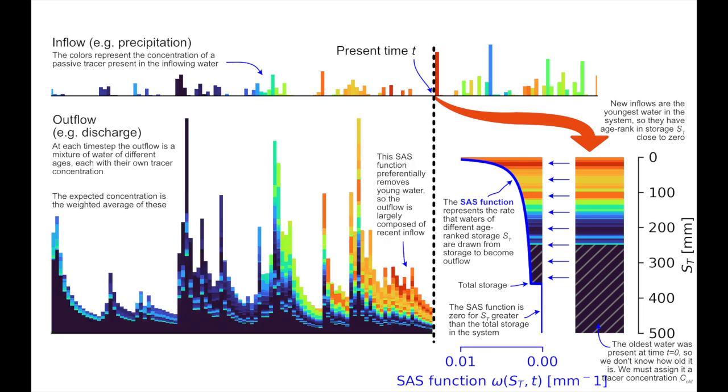Since the SAS function tells us the mixture of water in the outflow, we can calculate the rate of outflow of water of different ages. Since we also know the tracer concentration associated with each water age, we can calculate the concentration of that tracer that we expect to see in the outflow in our observations. If the SAS function we've used in our model is a good representation of how the system works, these predictions should match the data. Note that SAS doesn't predict the total outflow rate. You have to provide that data, just like you have to provide the total inflow rate.